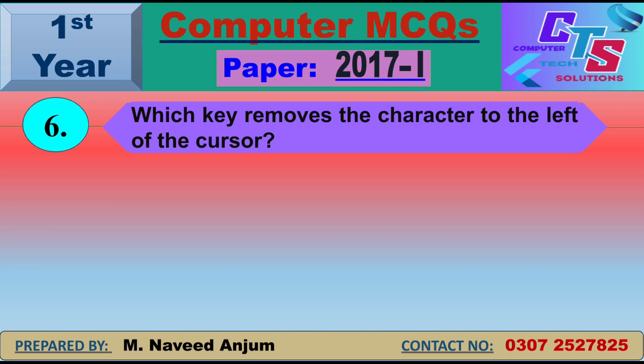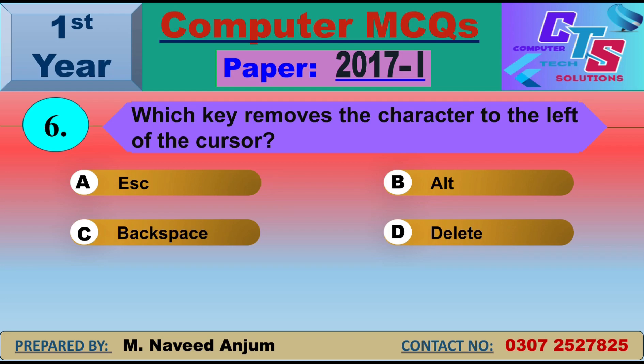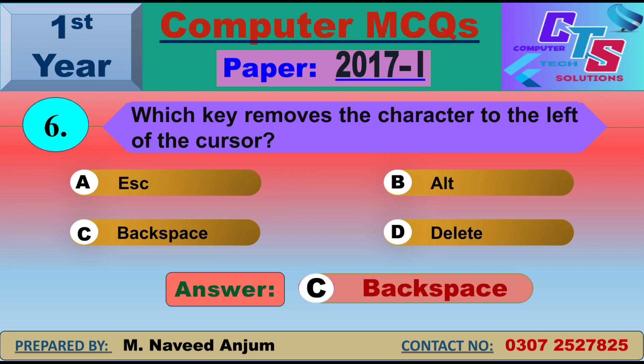Question number 6: Which key removes the character to the left of the cursor? If you want to remove a character on the right side, we use the Delete key. For the left side, we use the Backspace key. So option C — Backspace — will be the right answer.